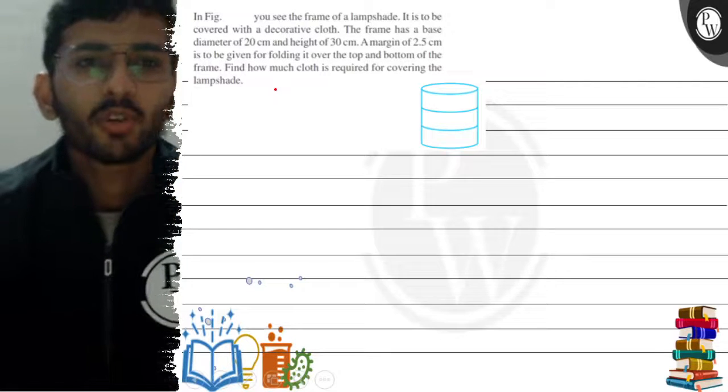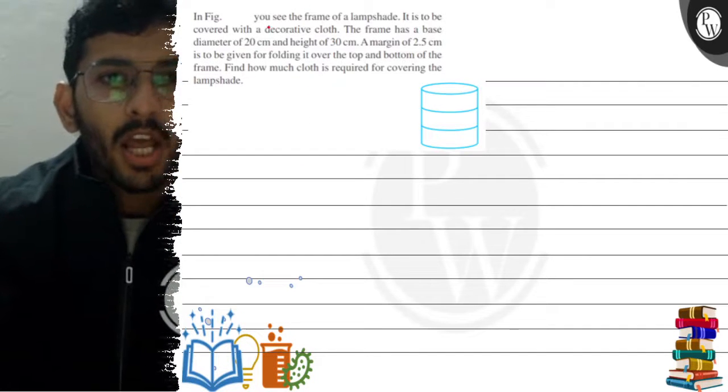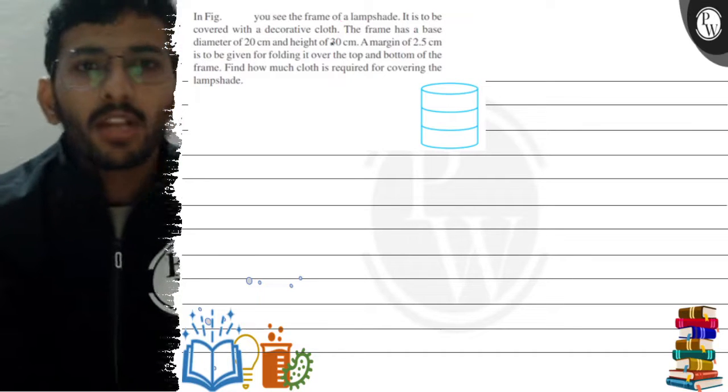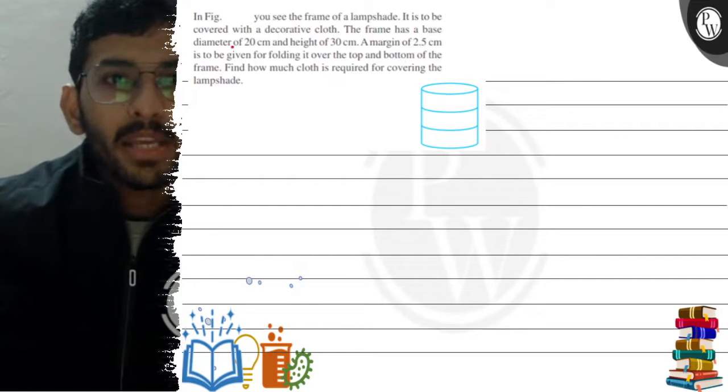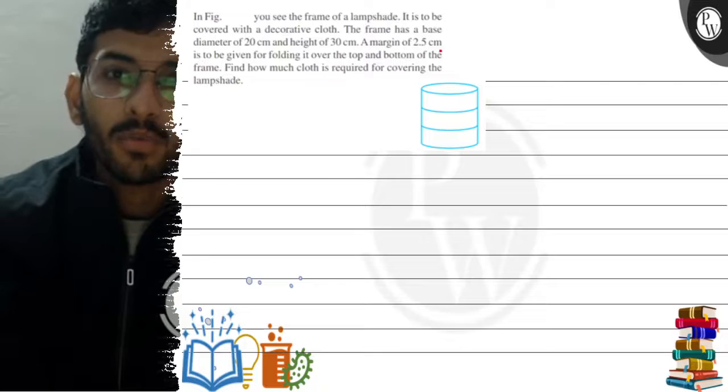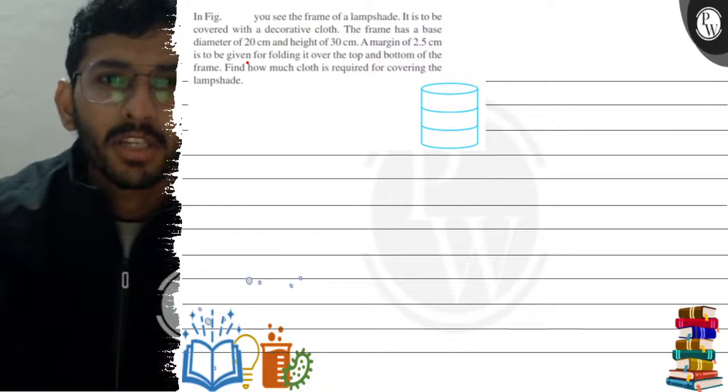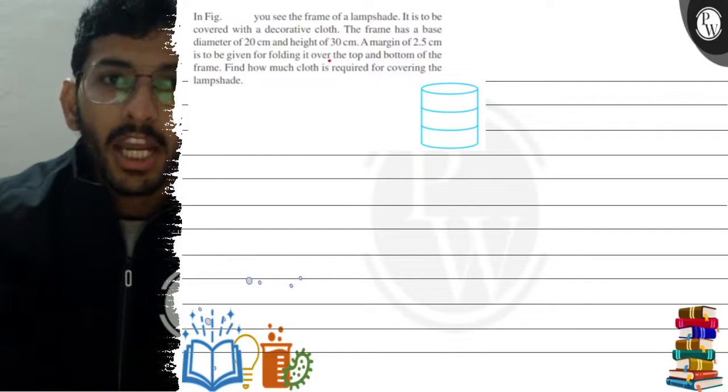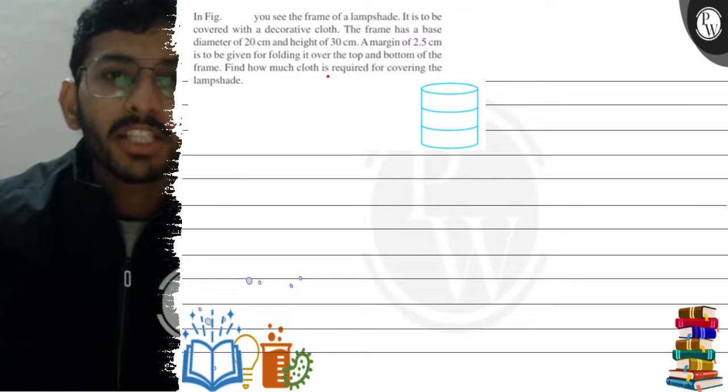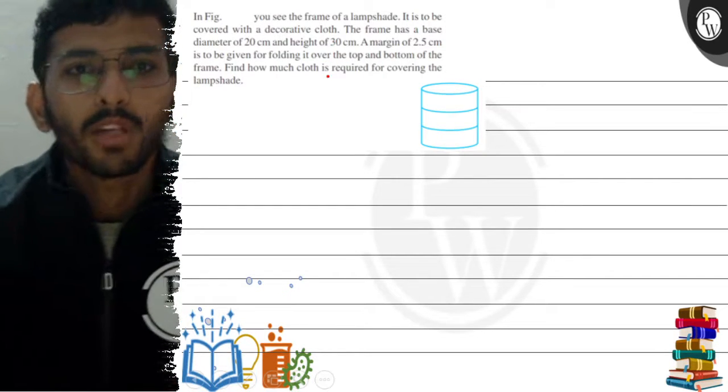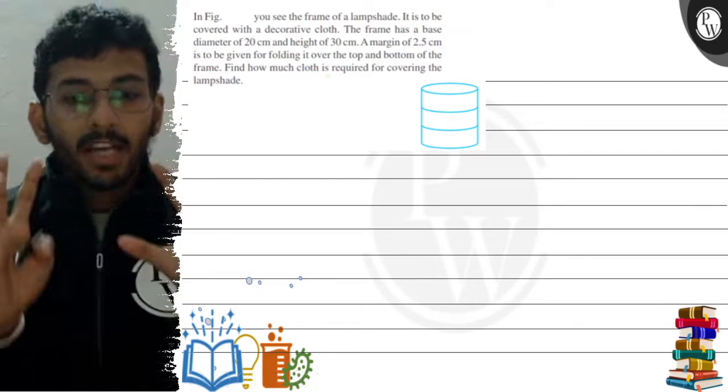Hello! Let us read the question. In the figure, you see the frame of a lampshade. It is to be covered with a decorative cloth. The frame has a base diameter of 20 centimeters and a height of 30 centimeters. A margin of 2.5 centimeters is to be given for folding it to cover the top and bottom of the frame. Find how much cloth is required for covering the lampshade.